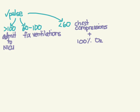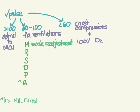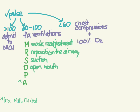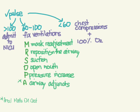To fix ventilations there's a mnemonic called MR SOPA. M stands for mask readjustment, R is reposition the airway, S is suction, O is open the mouth, P is pressure increase, and A is airway adjuncts — meaning you either intubate them or place an LMA.